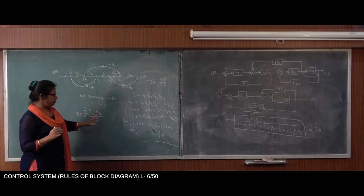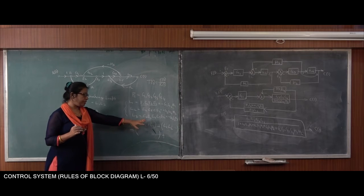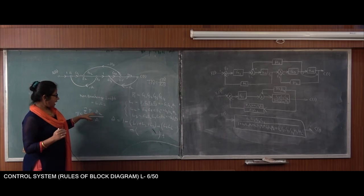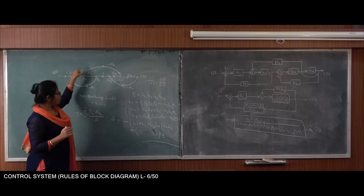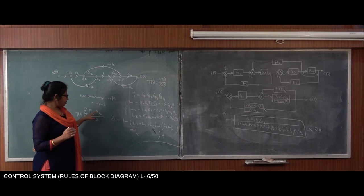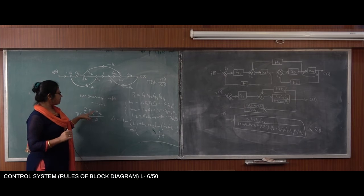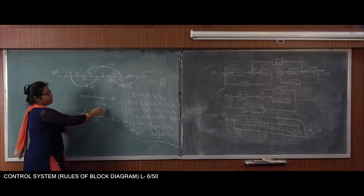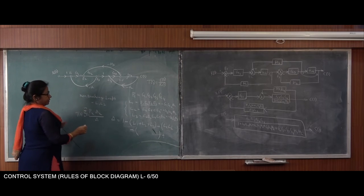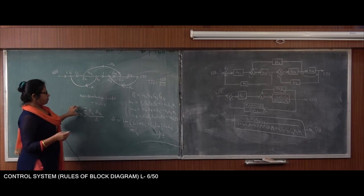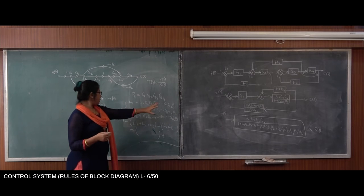Delta K uses the same formula: 1 minus sum of all individual loop gains, plus product of two non-touching loops. But since all loops are actually touching this one forward path, delta 1 will simply be 1. So the numerator will be only the forward path gain P1.